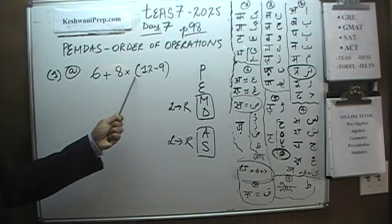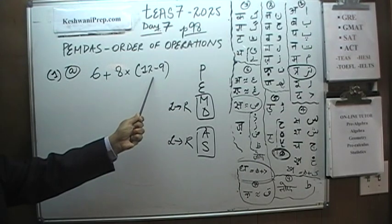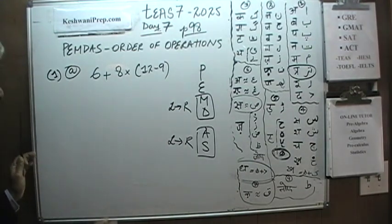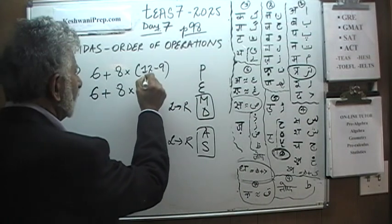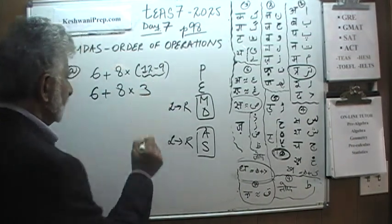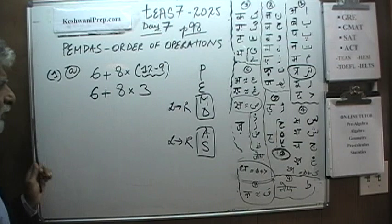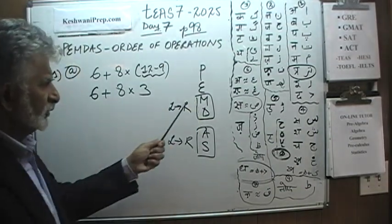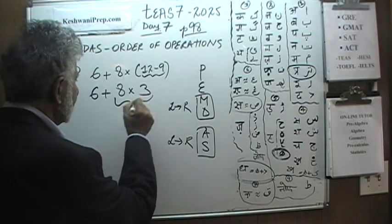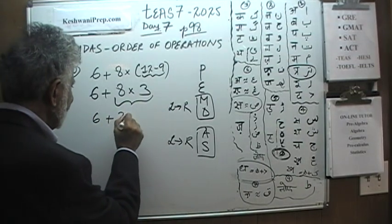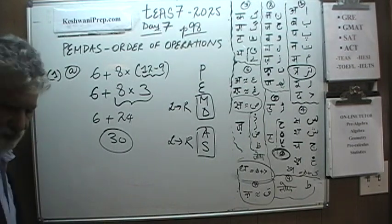We have a parenthesis here. Before we do anything at all, parenthesis is the very first one — we need to take care of this guy first. We have 6 plus 8 times 12 minus 9; 12 minus 9 is 3, so that part is done. Now we have addition and multiplication. We do the multiplication first: 8 times 3 is 24. So we get 6 plus 24, and now we do the addition. We get the answer of 30.